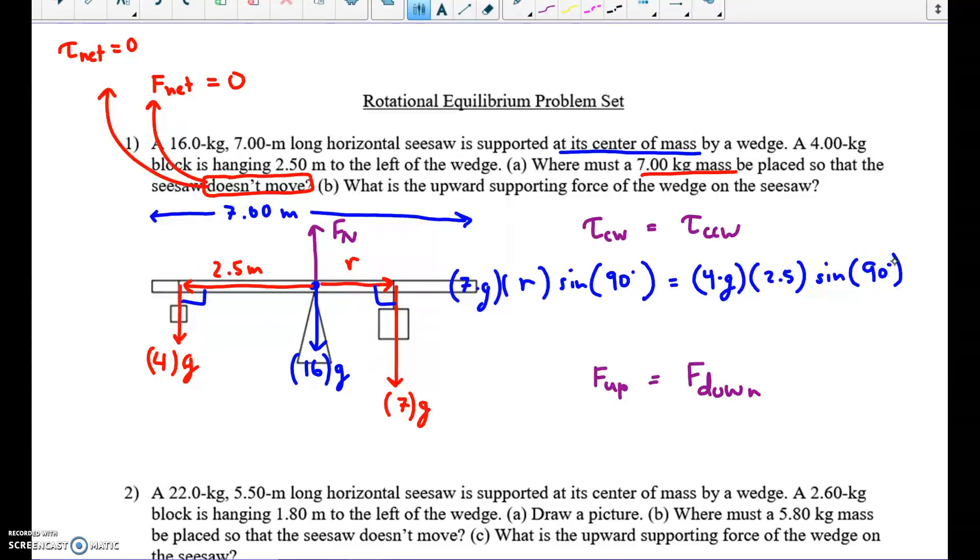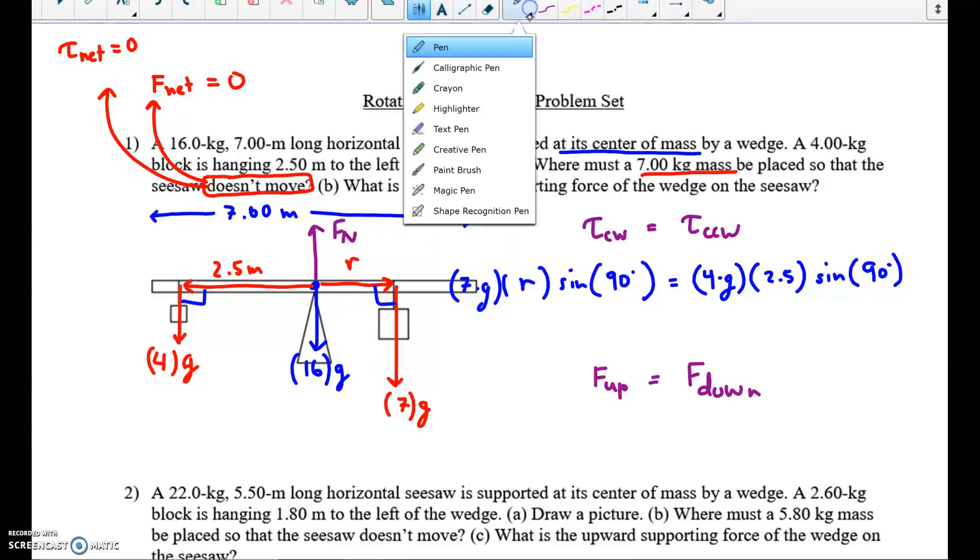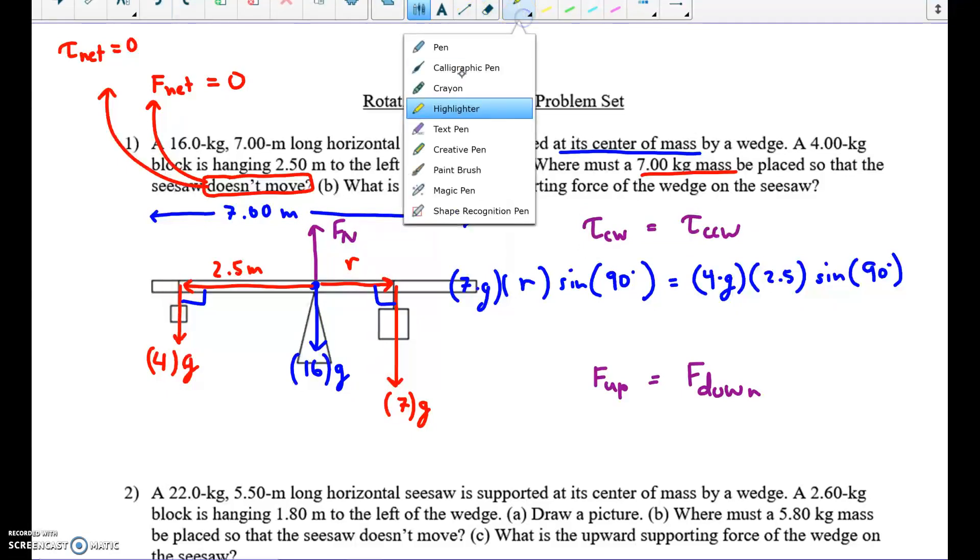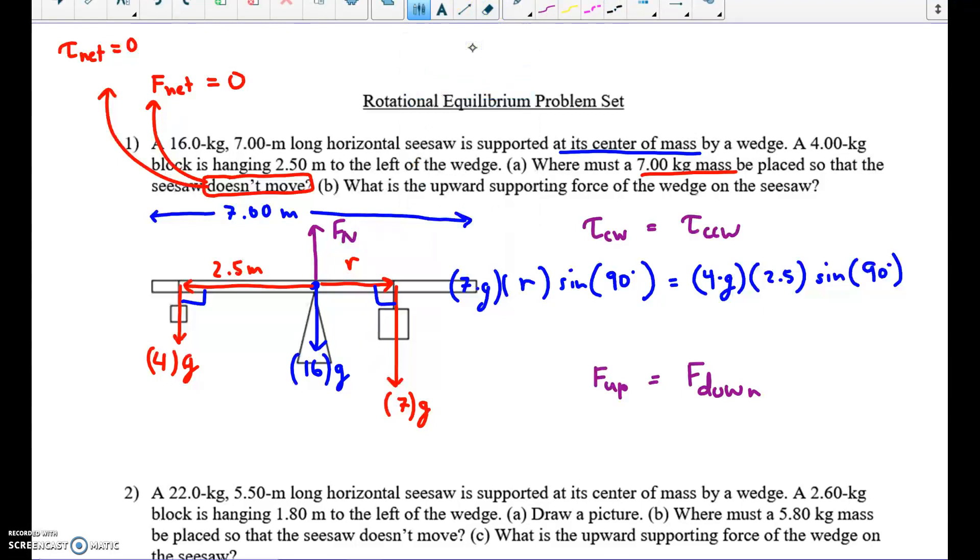Now you might be asking, well wait a second. You're ignoring two forces. I mean, you've highlighted this force and this force. But what about this one and that one? Don't they produce torque? Shouldn't we balance them in our equation? Well, the answer is actually those two don't produce any torque. The force is not zero. That's not the reason. But look back to the torque equation. How far are those forces from the pivot?